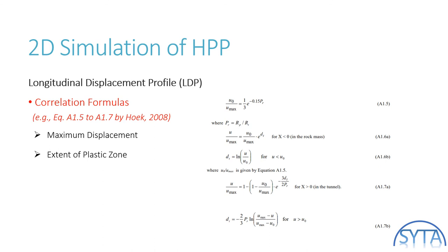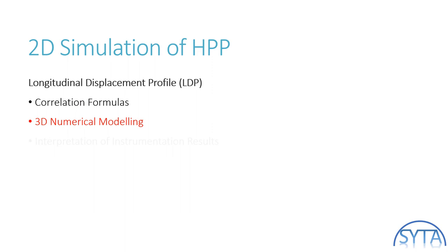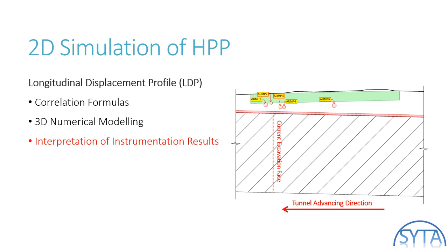Here comes the longitudinal displacement profile. There are different methods to obtain this curve. The easiest way is to apply correlation formulas — for example, Dr. Hoek proposed empirical equations to derive the expression of LDP. But such a method requires the maximum ground deformation and the extent of the plastic zone, which are not available since they require a complete GRC. The second way is to carry out a 3D numerical analysis, which is also the most accurate way. However, it is not covered in this research. The third method adopted in this research is by the interpretation of in-situ monitoring results.